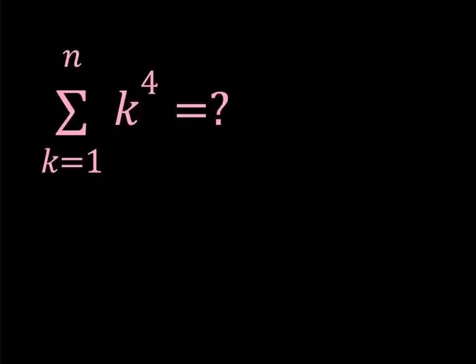Hello everyone. In this video we're going to be evaluating the sum of the fourth powers of consecutive integers 1 through n. So what this means is we have 1 to the fourth power plus 2 to the fourth power, plus dot dot dot, all the way up to n to the fourth power. This is what we're trying to find in terms of n.